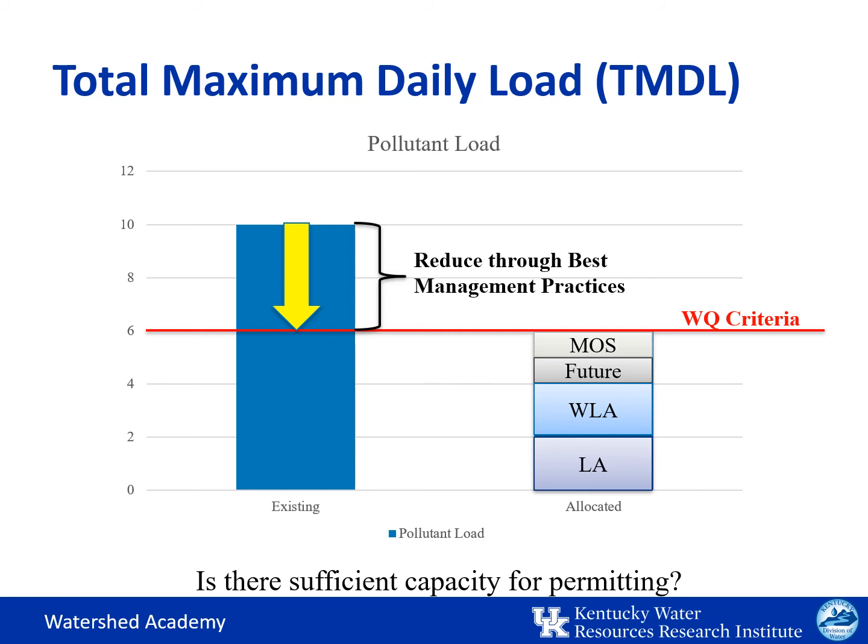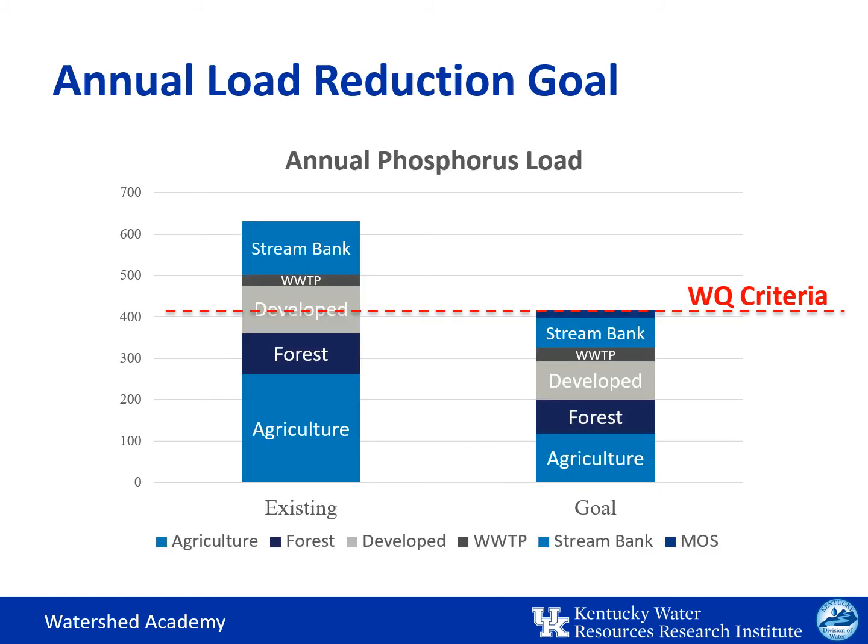One interesting note is that permitted dischargers must be allocated all of the capacity in the permit, even if they are discharging significantly less. This means that the in-stream concentrations achieved by implementation of the TMDL may actually be well below the water quality standard. In contrast, a watershed plan is not concerned with how much a discharger is allowed to pollute, but how much they actually are. The goal is to come up with the most cost-effective plan to reduce pollutant loading from existing levels to target levels. In this example of an annual load reduction goal for achieving acceptable phosphorus loading, you can see how the phosphorus sources may need to be reallocated to achieve the goal.